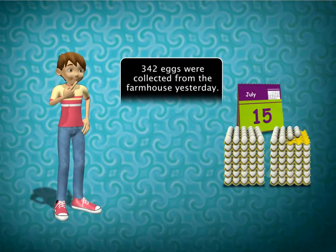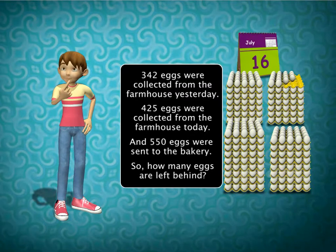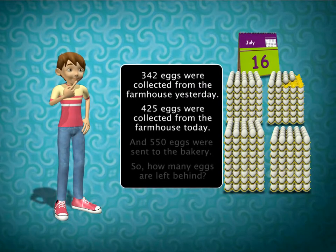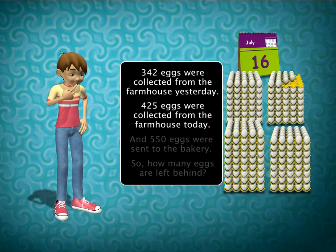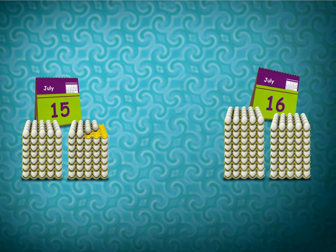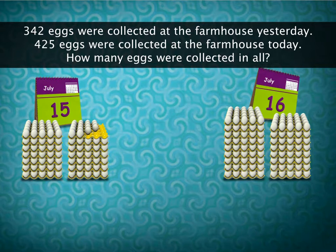Relax Sam. Let us look at the problem again. Let's divide the problem into two parts. Let's first find out how many eggs were collected in all. Now, how can we find out the total number of eggs collected? By addition or subtraction?